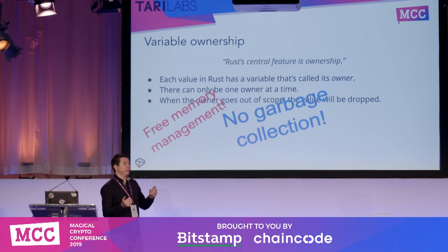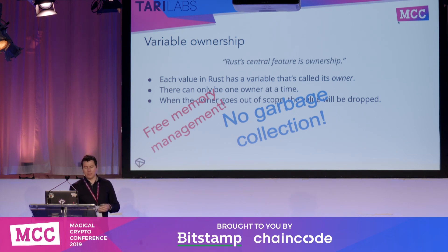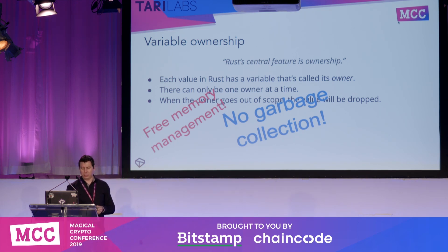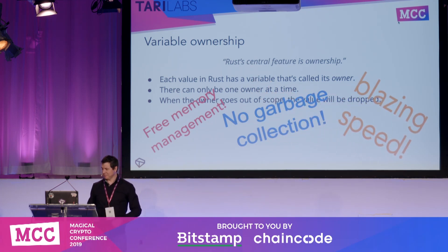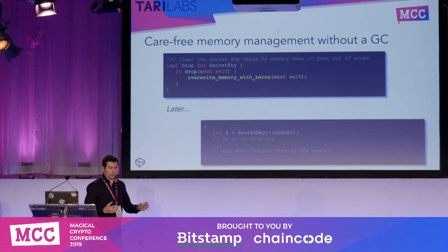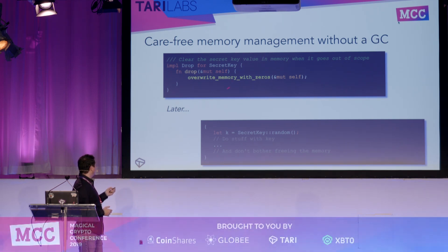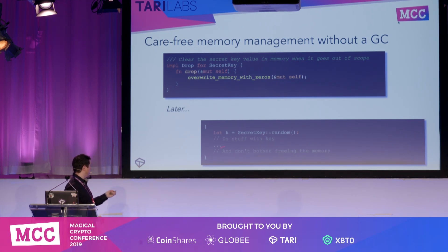You also don't have to worry about a garbage collector. With a language like Java, you don't have to free memory explicitly, but occasionally something runs in the background to clean up after you — that's not ideal for cryptocurrency or financial software where you don't want things floating around in memory longer than necessary. These two properties combined give you blazing speed and carefree memory management. You can specify that when a secret key goes out of scope, it clears that memory and writes zeros — and you don't have to explicitly free anything. The compiler sticks that code in for you.